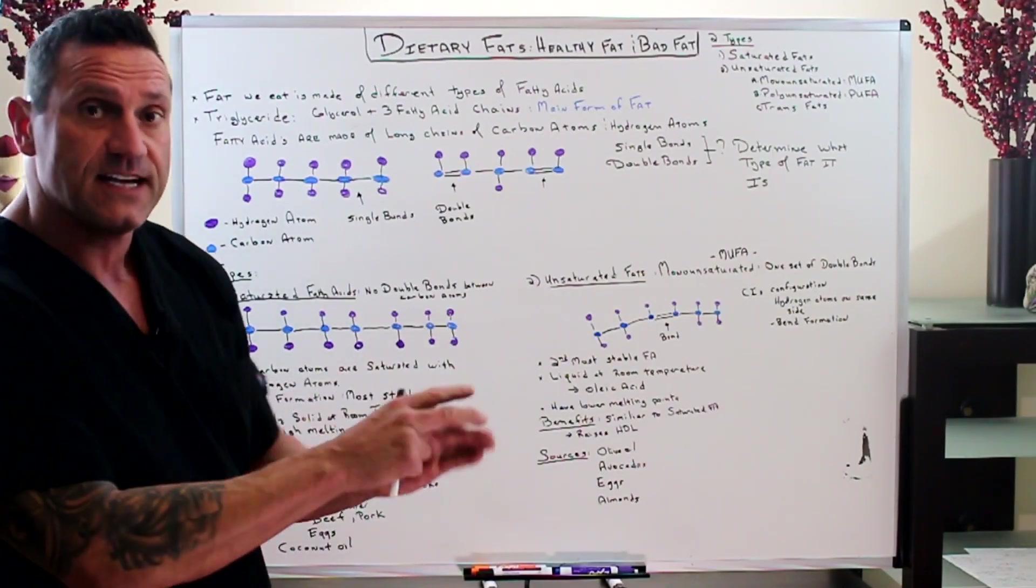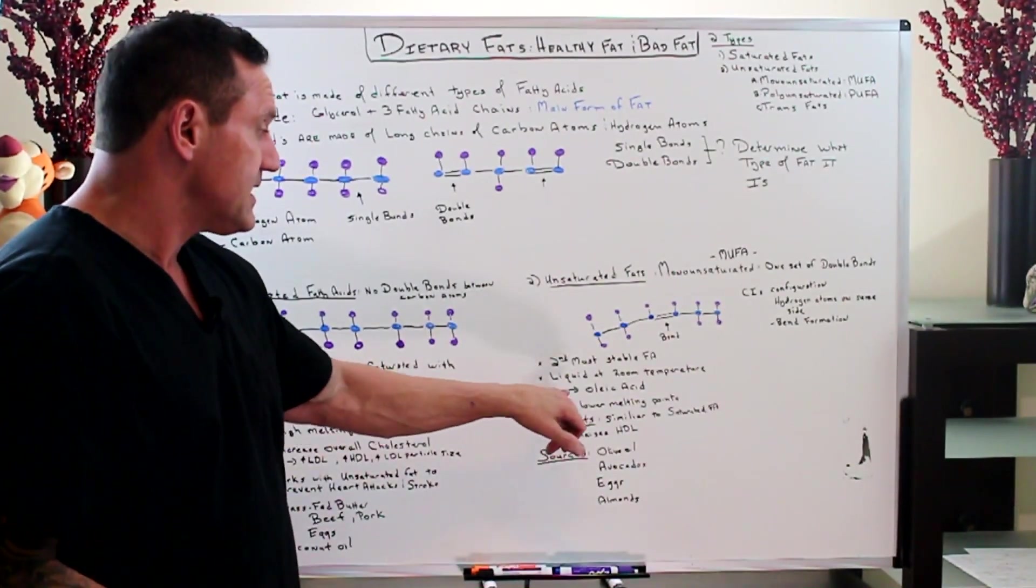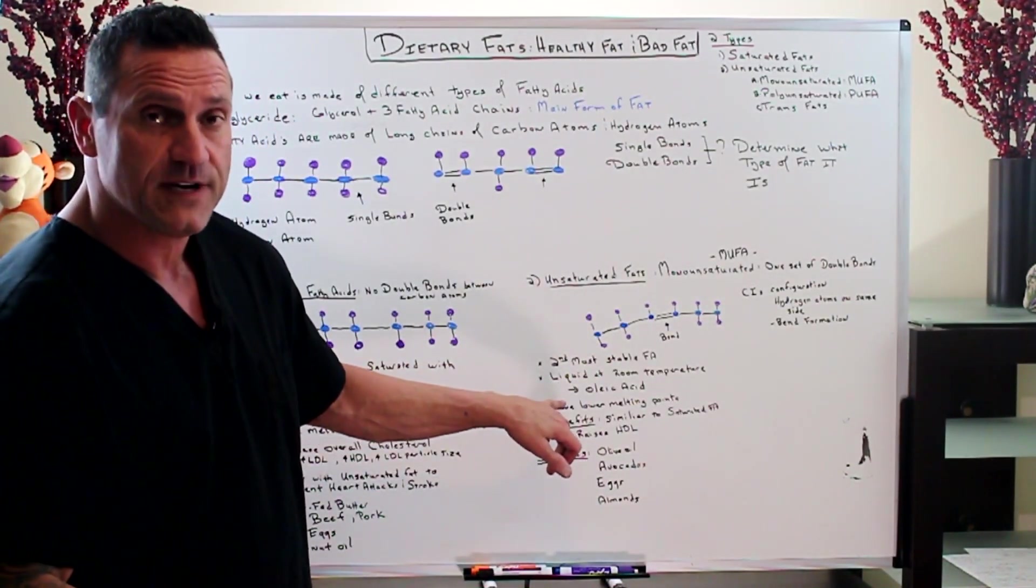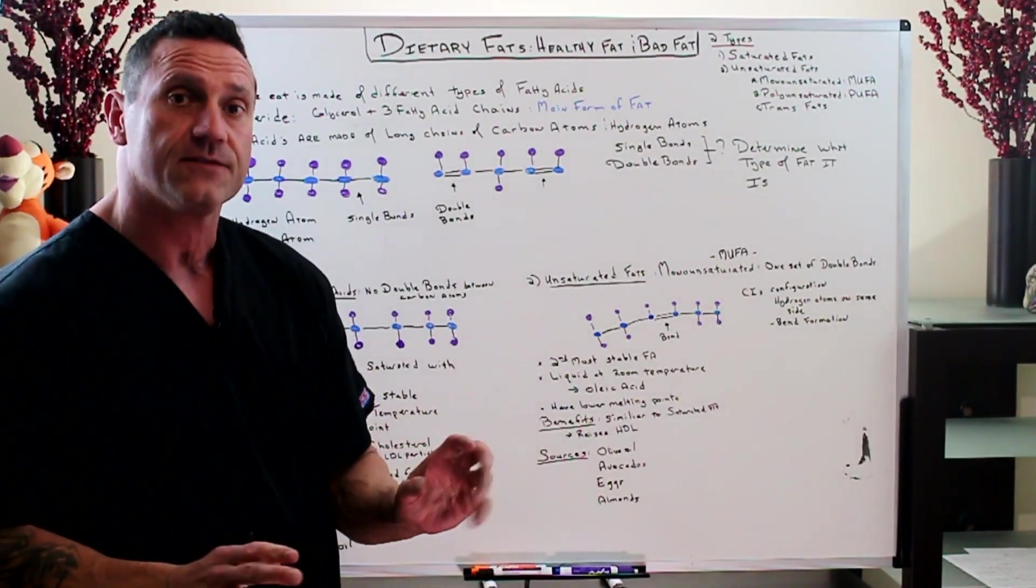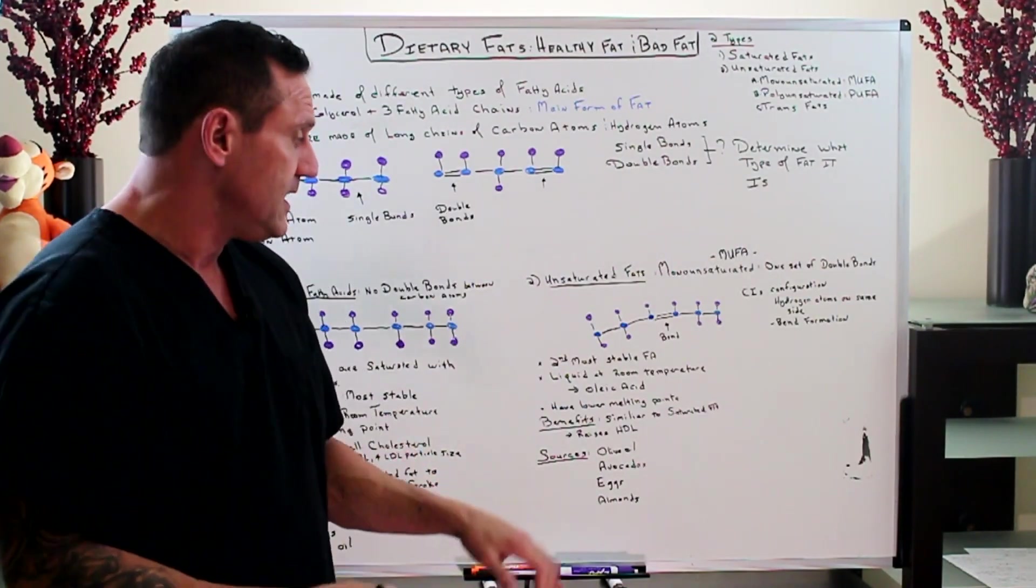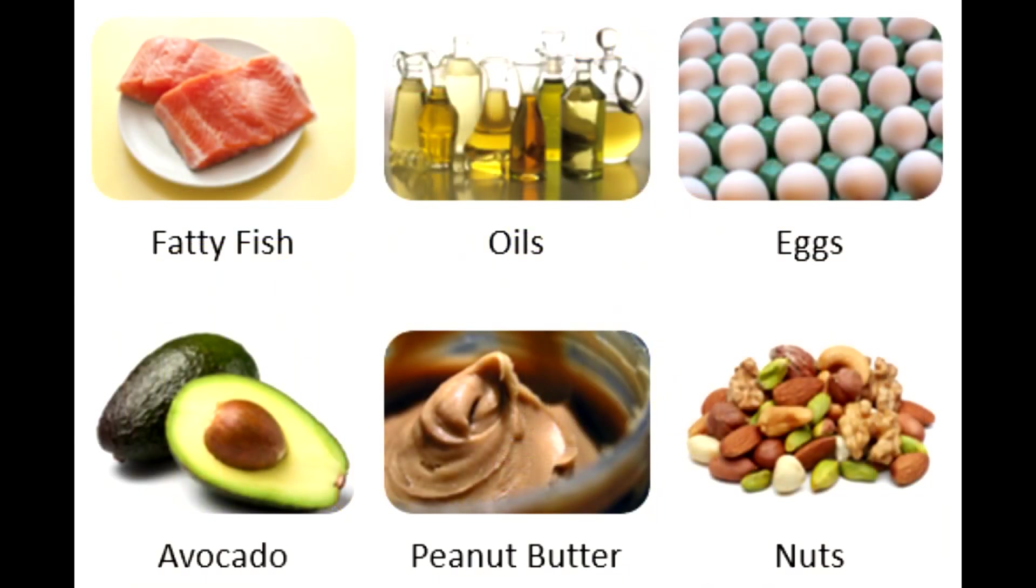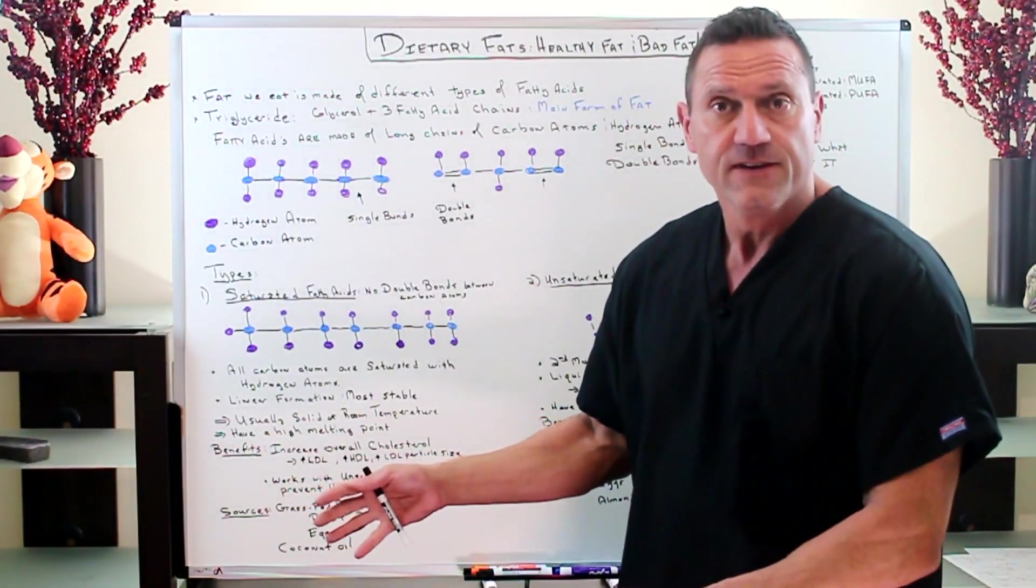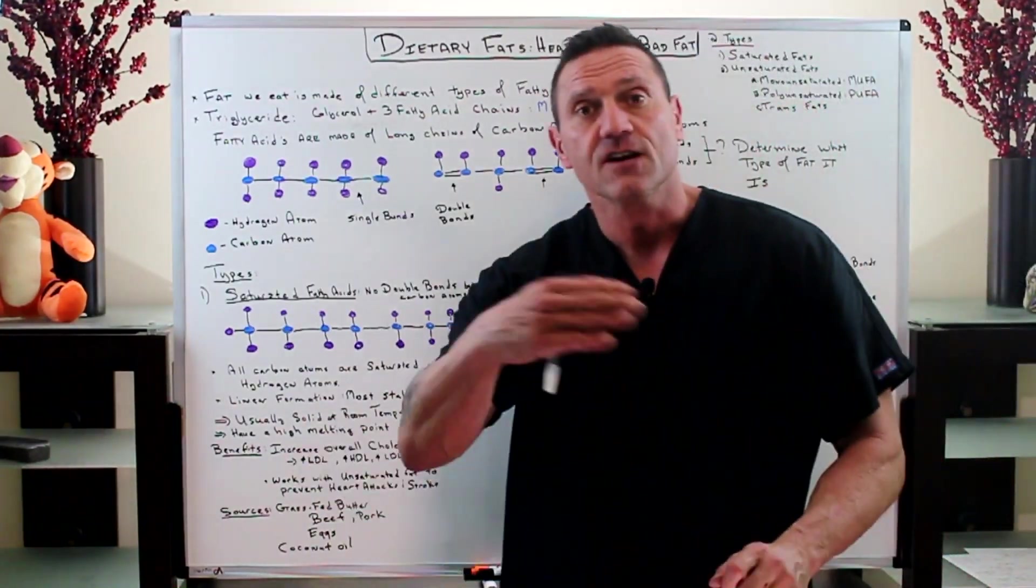This is liquid at room temperature. Remember, saturated fat is like your butter. Monounsaturated is your oils, particularly oleic acid. Very good for us. This has a lower melting point and the benefits are similar to saturated fatty acids - helps balance out cholesterol levels. The sources of monounsaturated fatty acids are olive oil, avocados, eggs, grass-fed eggs, organic eggs, and almonds.